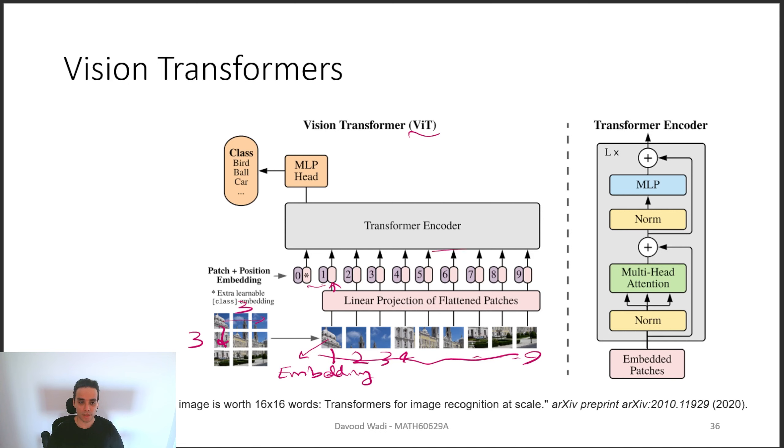Then the rest is pretty basically copy-paste of the original transformers model, the encoder part, where we use the multi-headed attentions, residual skip connections, and these are the Q, K, and V created from the patches.